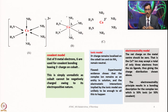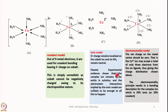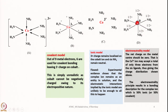Then came the electron neutrality model. It says the net charge on the metal center should be 0 or between +1 and −1, close to 0. So cobalt(III) may accept a total of only 3 electrons from 6 ligands, giving the resulting charge distribution. The electron neutrality principle results in a bonding description for the complex having 50% ionic character and 50% covalent character. The charge distribution on all entities is well within +1 to −1, with cobalt carrying 0 charge.